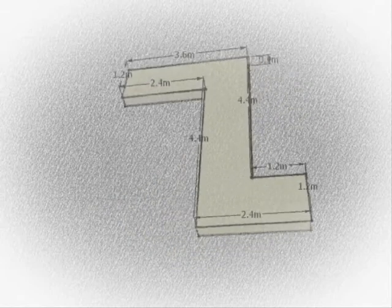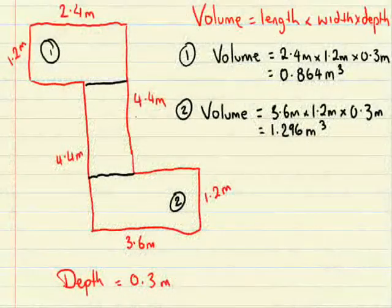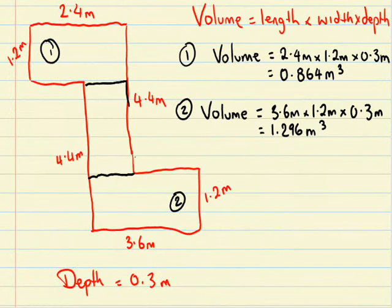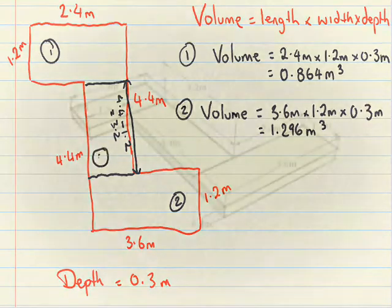So we have worked out the top bit. We have worked out the bottom bit. It just leaves us this little bit in the middle here. Now we have got an unknown side here. So to work that out we are going to have to get that 4.4 metres and take away 1.2 metres, and that will give us that side length there.